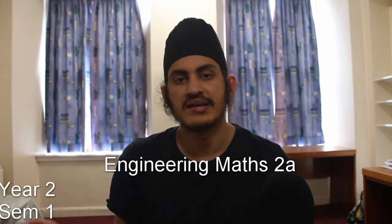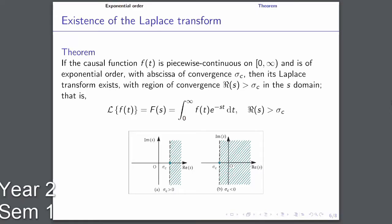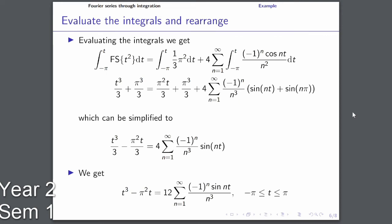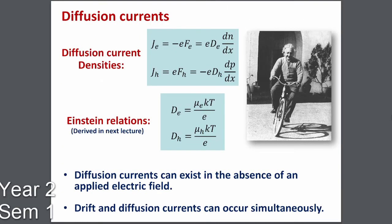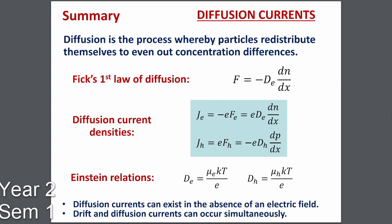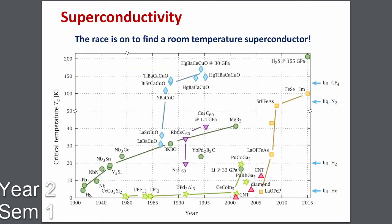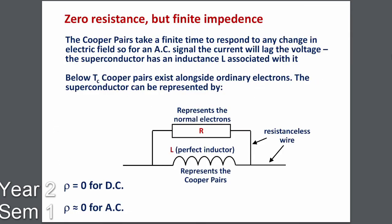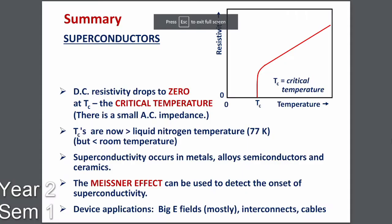I also had Engineering Maths 2a, where we learned about Laplace transforms and Fourier series. Then I had a unit called Microelectronics, where we learned about drift conduction of electrons, atomic-level concepts, electric fields in a PN junction, MOSFET transistor principles, and MOSFET transconductance. This lecture was actually quite good — I was very pleased with the slides. After every lesson there was a table with a key summary of what the lecture was about, so before the exam I'd just read all the key summaries. I think other subjects should have done the same.